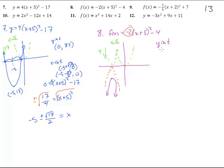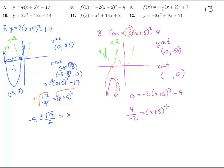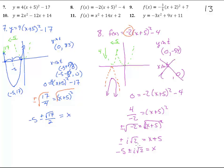When we get the y-intercept, we stick in 0 for x. 25 times negative 2 is negative 50, minus 4 is negative 54 — so the y-intercept is at negative 54. For the x-intercepts, looking at the graph, I'm assuming we're going to get imaginary ones. Setting y equal to 0: 0 equals negative 2 times the quantity x plus 5 squared minus 4. Add 4 over, divide by negative 2, and we get negative 2 equals x plus 5 squared. When we square root both sides, plus or minus, that's where we come up with imaginary numbers. So there are no x-intercepts.